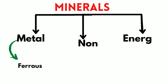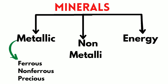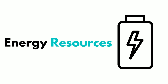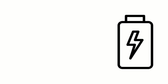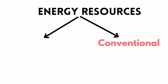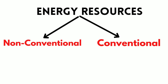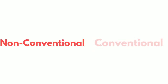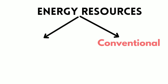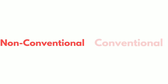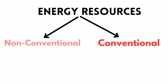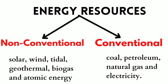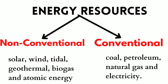Let's move to the other very important section — energy resources. Energy resources can be divided into two categories: conventional sources and non-conventional sources. Conventional sources are non-renewable; important examples are coal, petroleum, natural gas, and electricity. Non-conventional sources are renewable; important examples include solar, wind, geothermal, biogas, and atomic energy.